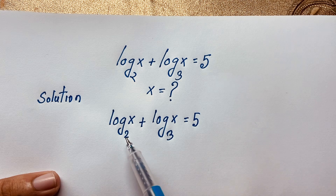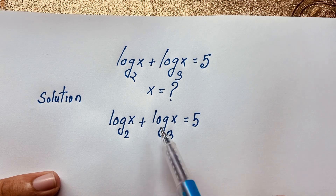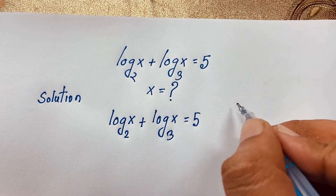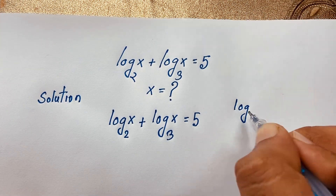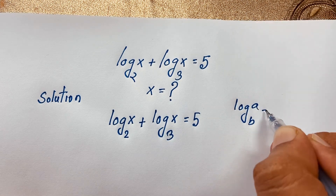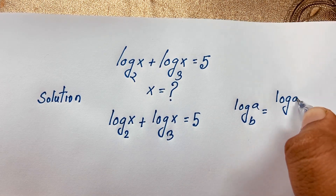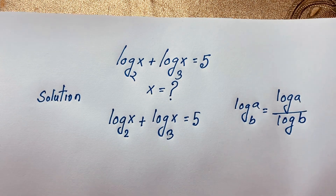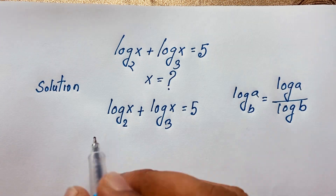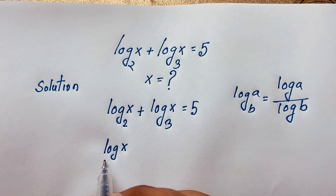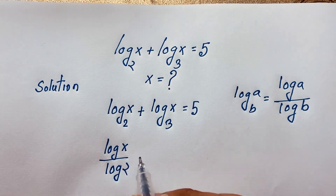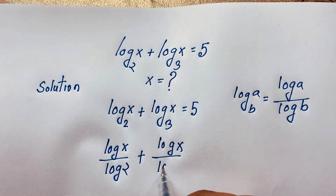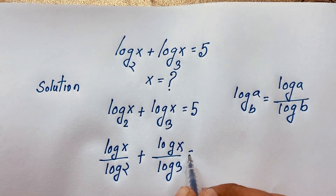This is our question. Here the bases are different — this is base 2 and this is base 3. We will find out the value of x. We know that log a base b equals log a over log b. According to this formula, I can rewrite this expression as log x over log 2 plus log x over log 3 is equal to 5.